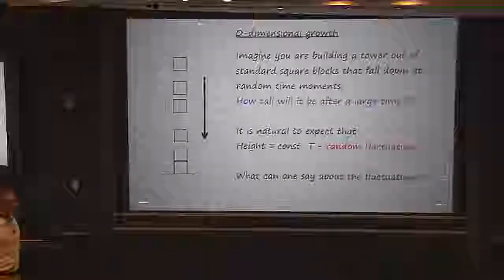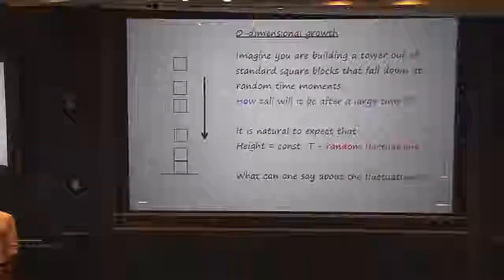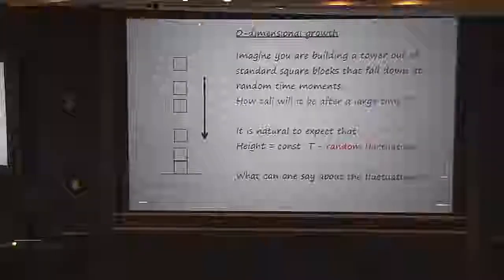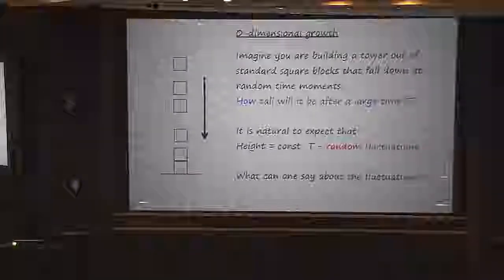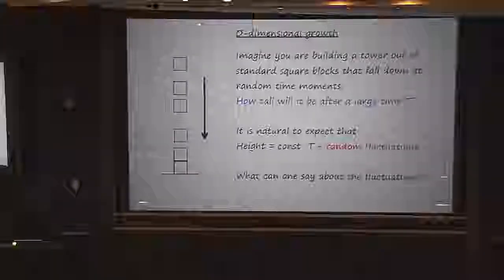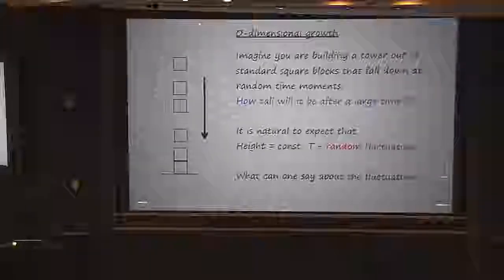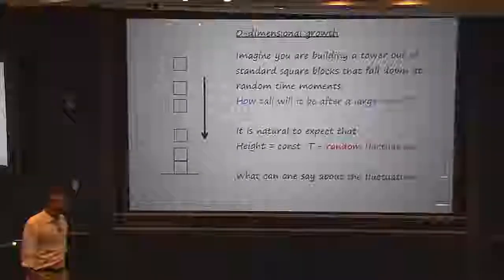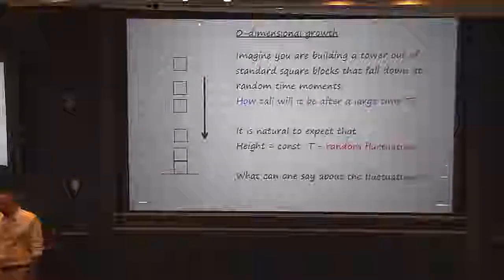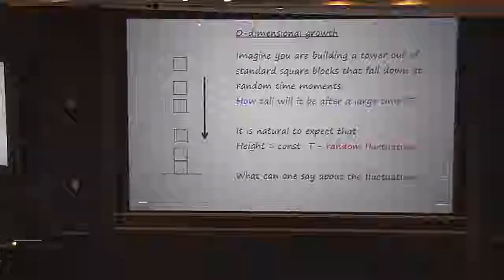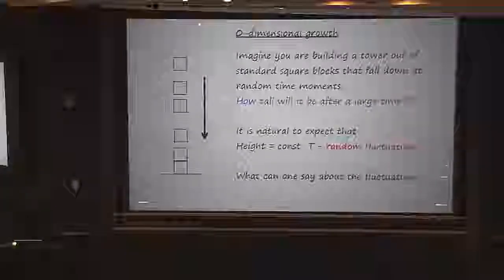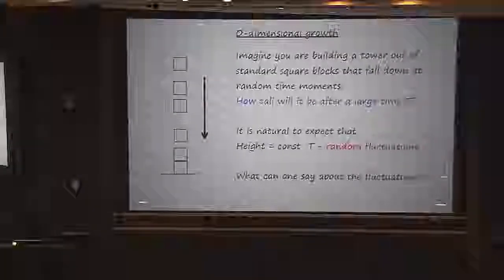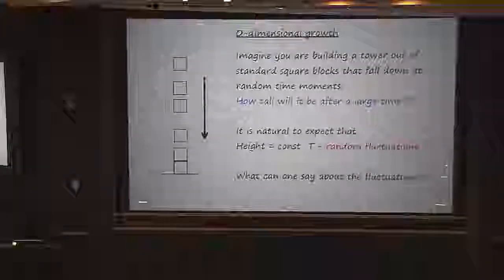Now that's easy. But the next question I want to ask is: what are going to be the fluctuations around that predicted value? The problem as stated is probably not quite well posed. I don't really give you enough information to mathematically solve this problem.